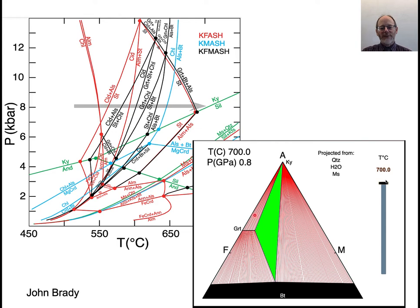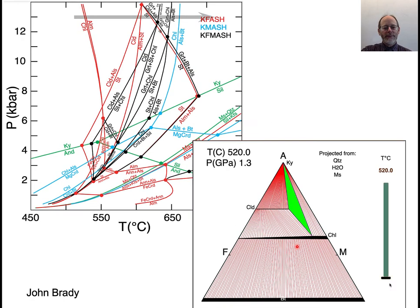Of course, if you have compositions over in different regions, you get garnet-kyanite, garnet-biotite, or kyanite-biotite assemblages. A different pressure would give you a different series of assemblages.